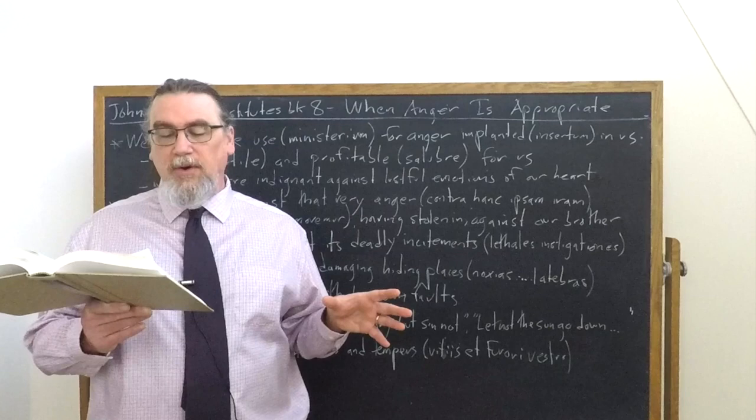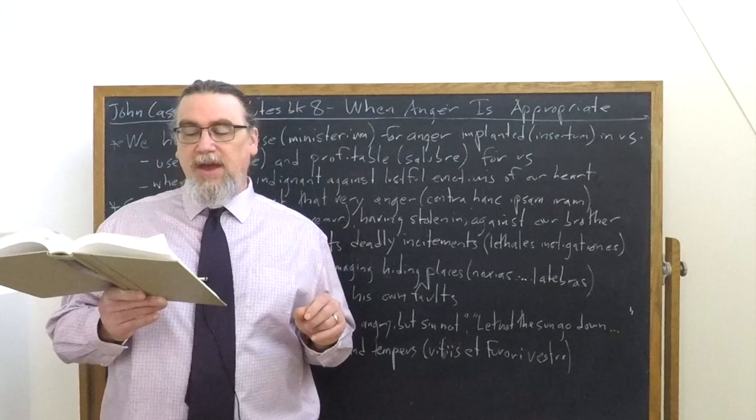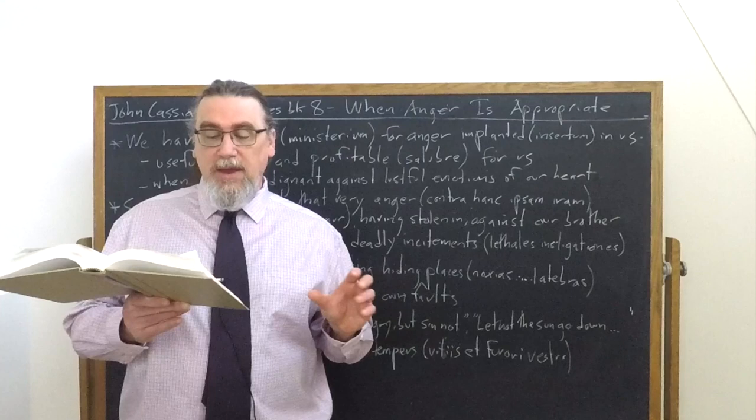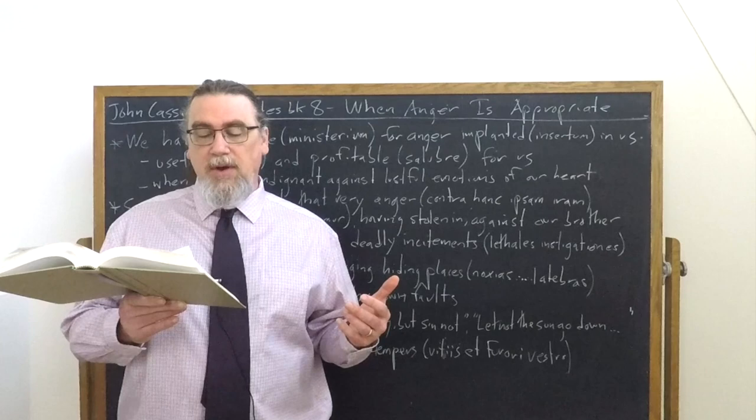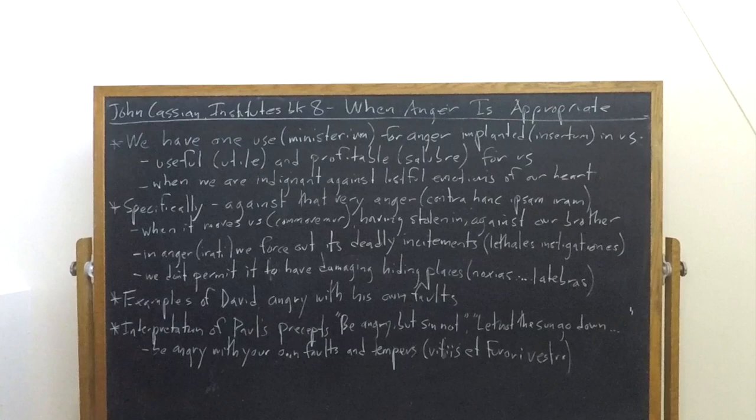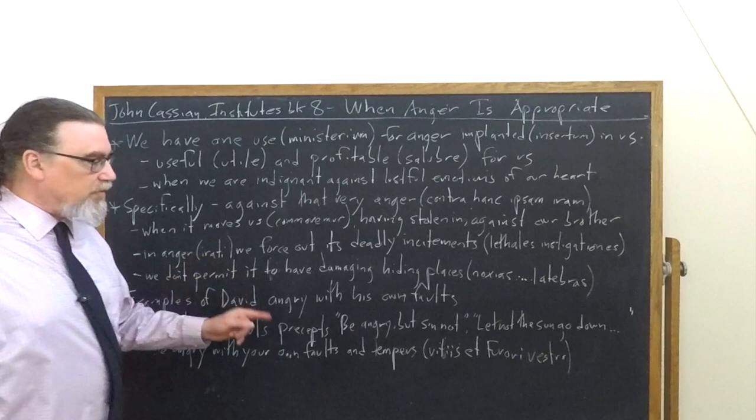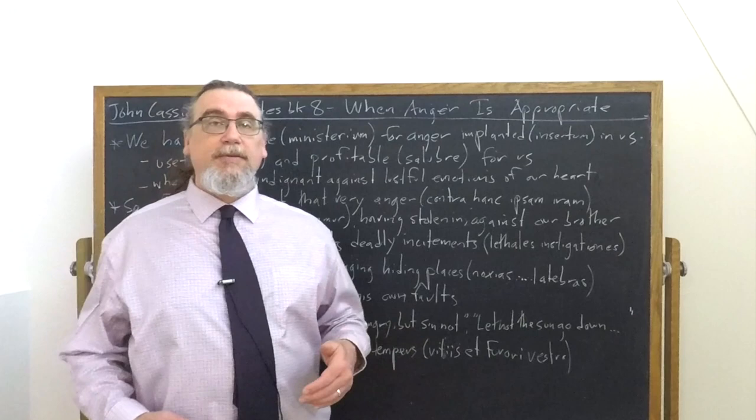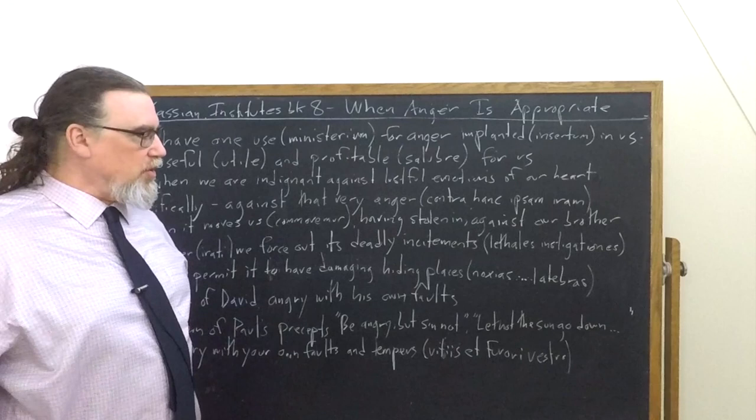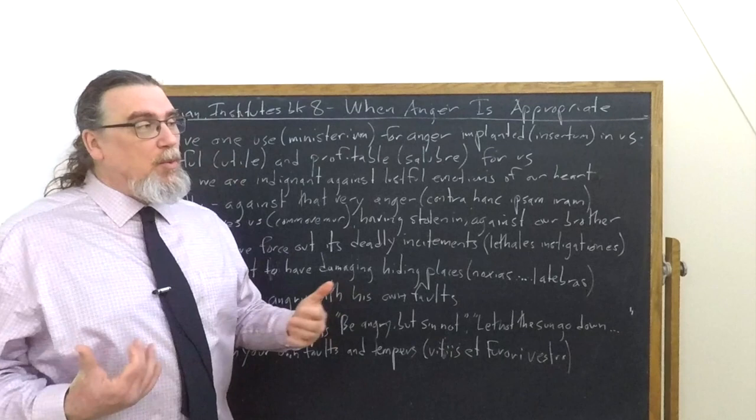So letting the sun interpreted allegorically of righteousness, go down on your wrath. If you're angry, he says, we straightway give place to the devil in our hearts. Then how is it that above he charges us to be angry saying, be angry and sin not. So we seem to have a contradiction here and Cassian's explanation, which reconciles that contradiction is he's saying, well, what Paul is actually telling you is be angry with your own faults and tempers. And interestingly, faults here is vitties. So it's not just like, eh, you made a mistake. It's a vice, vices.